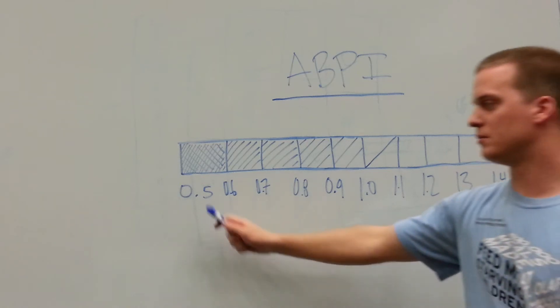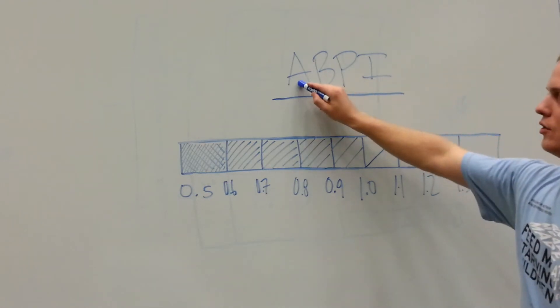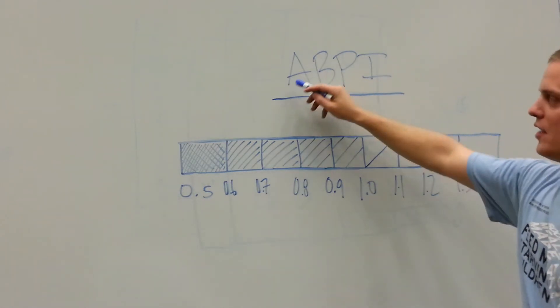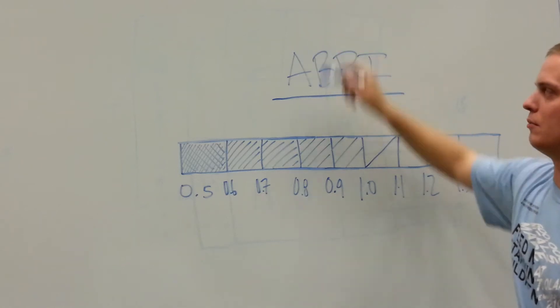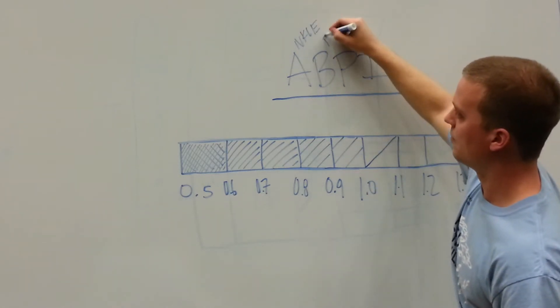Now up here is a number line, you can see it goes from 0.5 to 1.4. Those numbers are your index when you take your ankle blood pressure and divide it by your brachial blood pressure. So I'll write those up here, ankle and brachial.